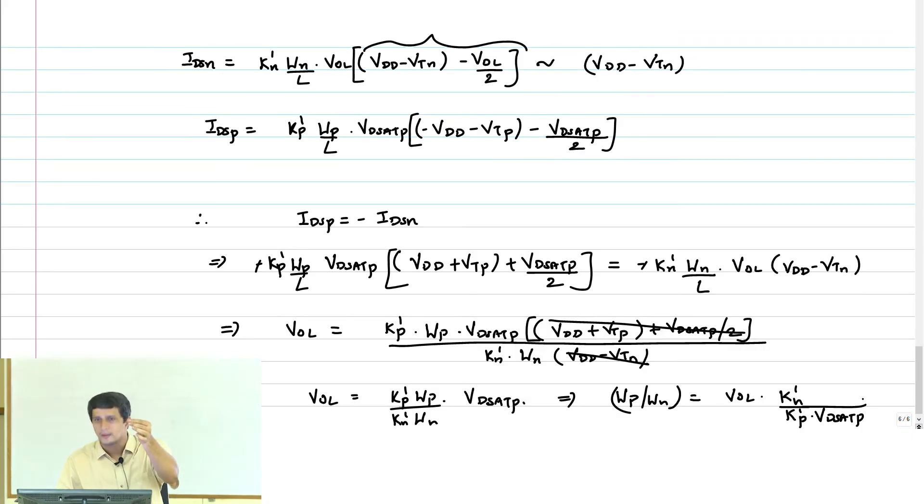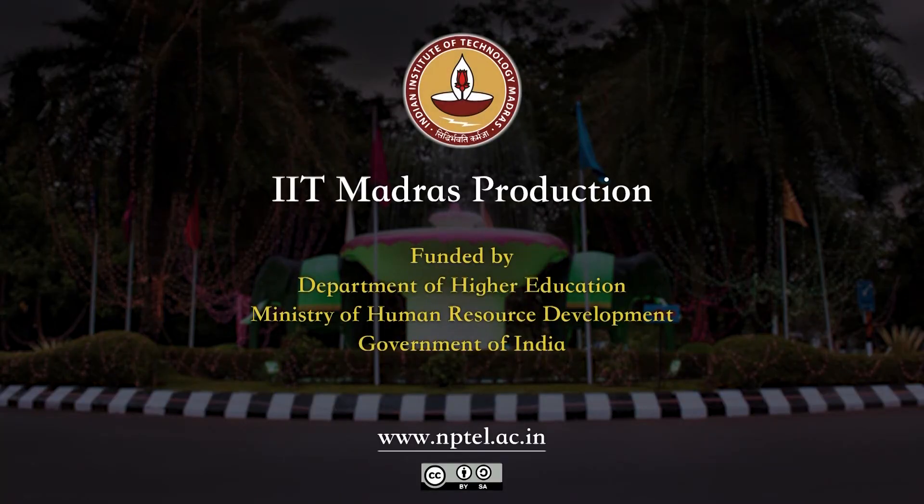So if your VOL goes up then WP has to go up. That is what this equation says: WP by WN is proportional to VOL. So if VOL has to come down then WP by WN has to come down.